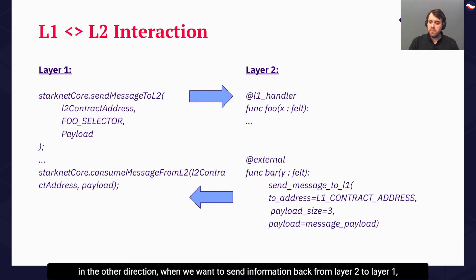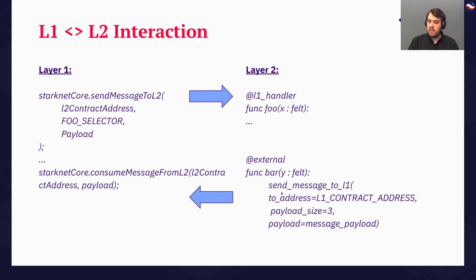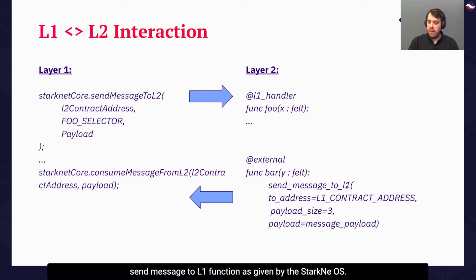In the other direction, when we want to send information back from Layer 2 to Layer 1, we have the function bar here, which can invoke the send message to L1 function that is given by the StarkNet OS. As input, this receives a Layer 1 contract address, a payload size indicating the amount of inputs we are passing in the message, and the payload itself.